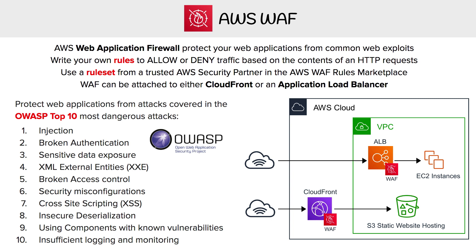If you didn't want to create your own rules and wanted to use one from a trusted AWS security partner, you could purchase one very cheaply in the AWS WAF rules marketplace. They call it a rule set because it's a bunch of rules included. Generally, those rule sets will protect you against the OWASP Top 10, which are the most dangerous attacks for web applications.